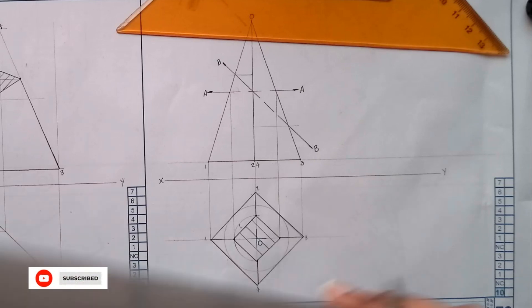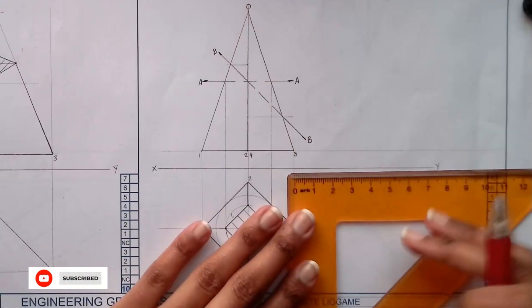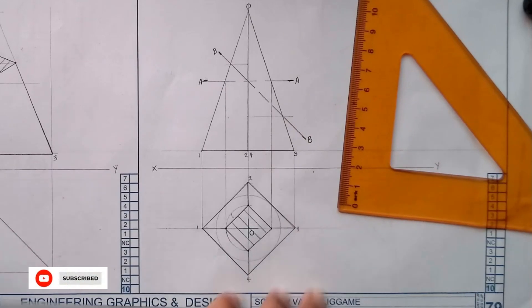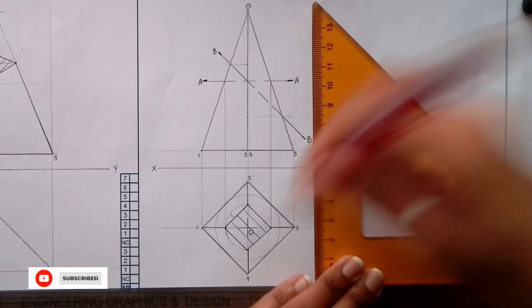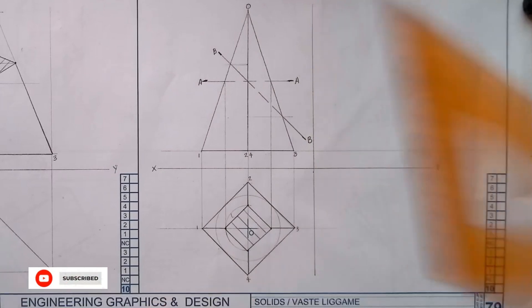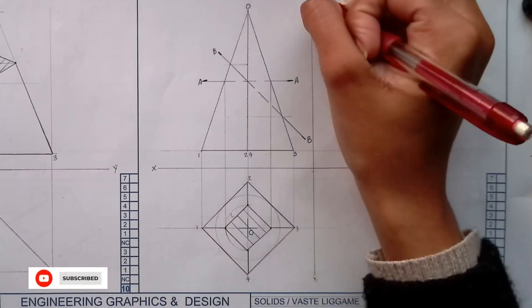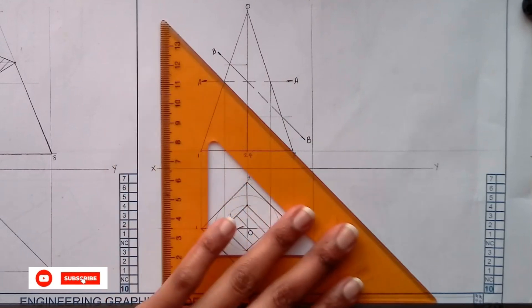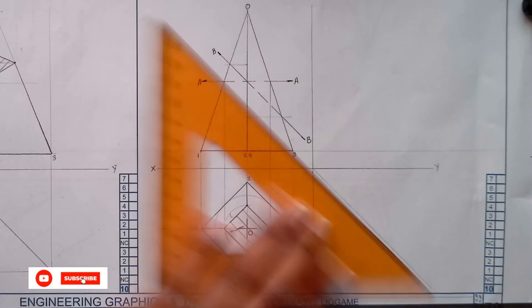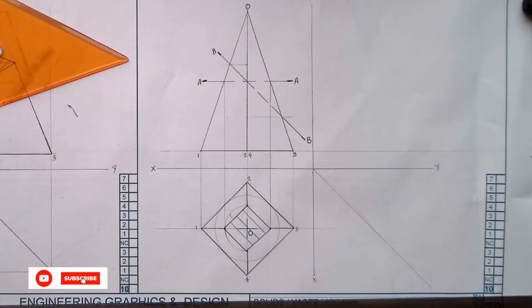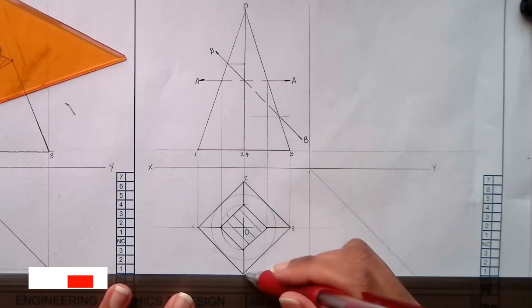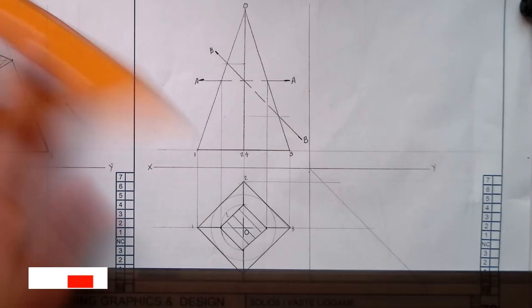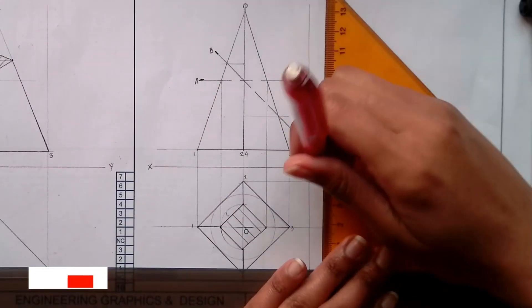Now for the sectional left view. Turn out. So where you mark to turn out there, extend your line. Then it will be your other xy. 45 degrees. Then you have to project your points to the 45, then up.